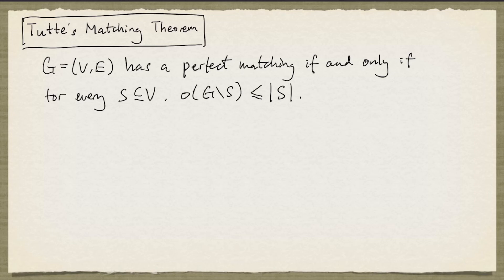G has a perfect matching if and only if for every subset of nodes S, the number of odd components in G drop S is at most the cardinality of S.